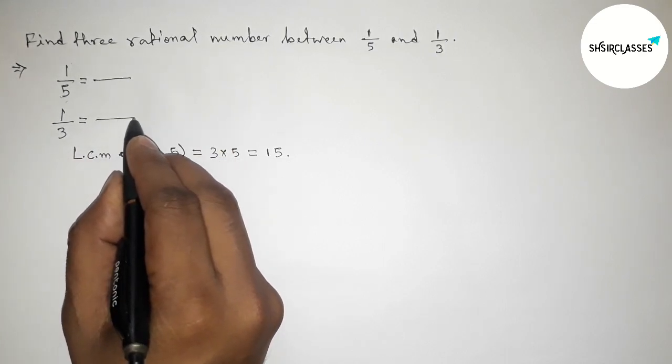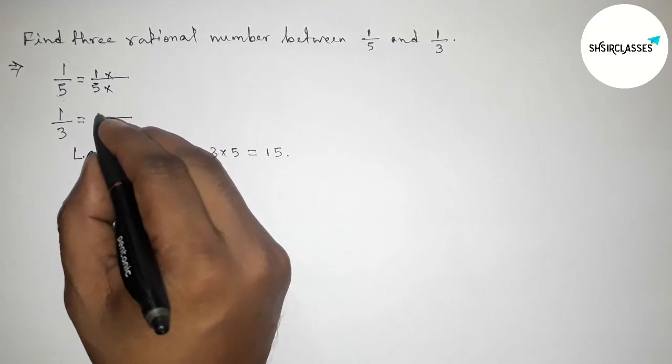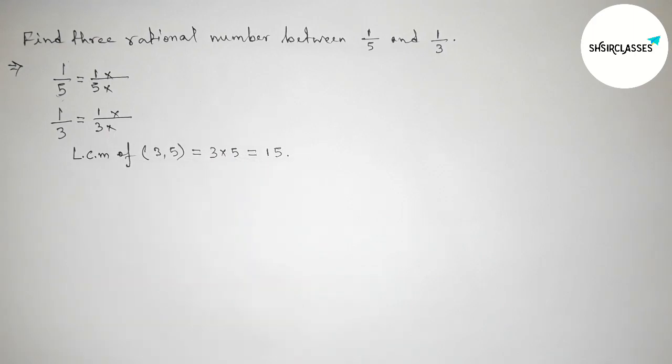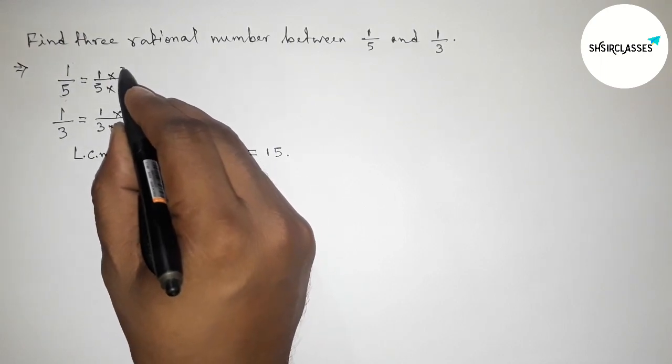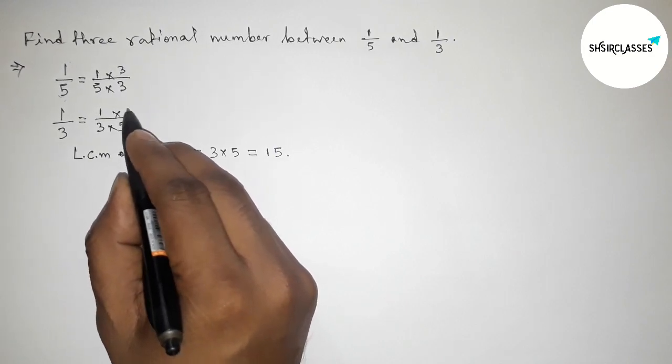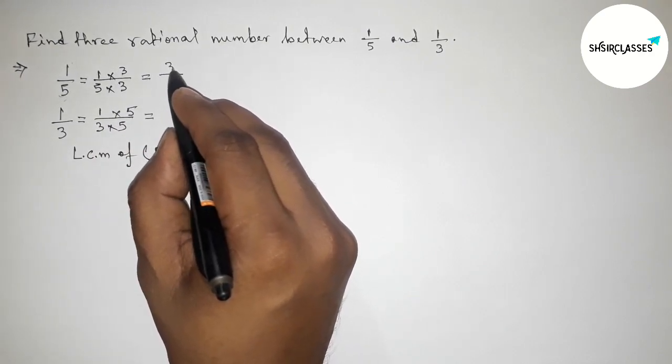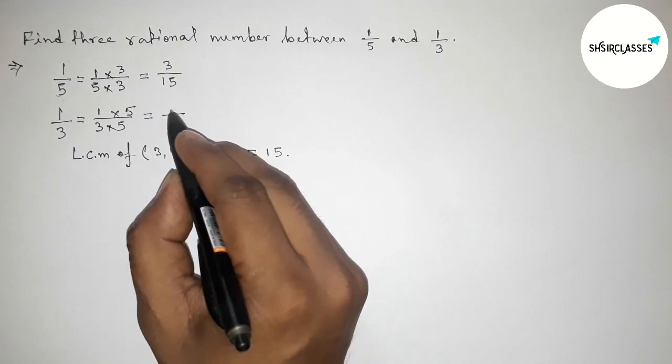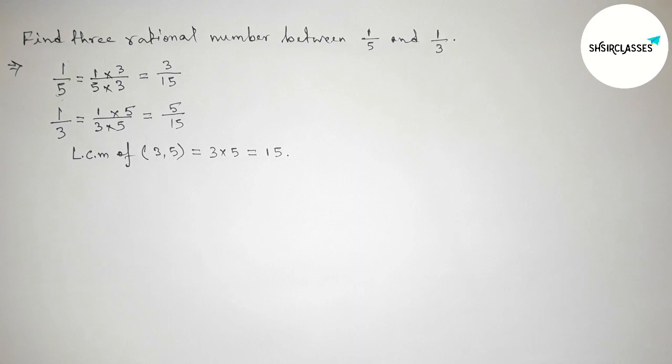Now I'm going to do some calculation. First, multiplying 1/5 and 1/3. For the first, making 15, taking here 5 threes are 15, so multiplying up and down by 3. Here 3 into 5, taking 5 up and down. So this is 3/15 and here this is 5/15.